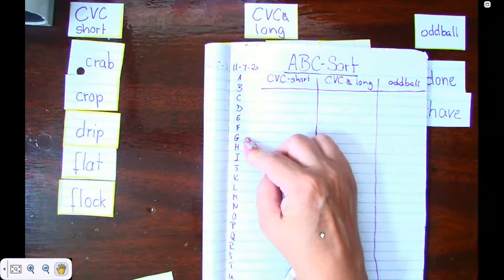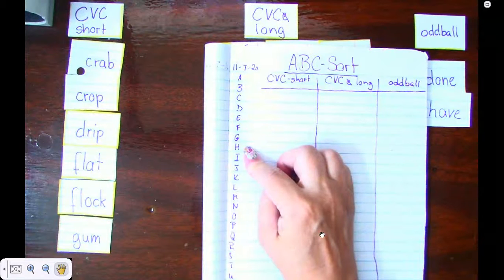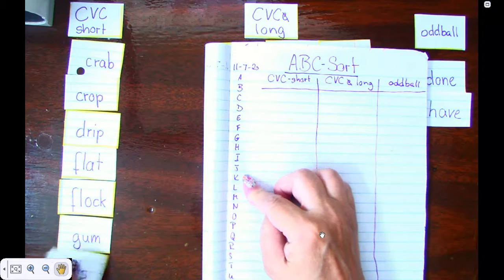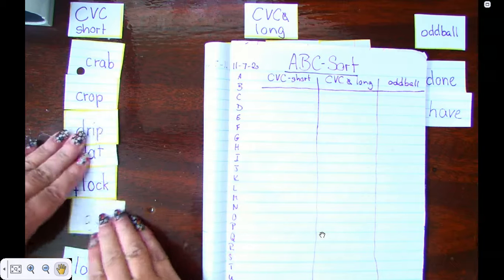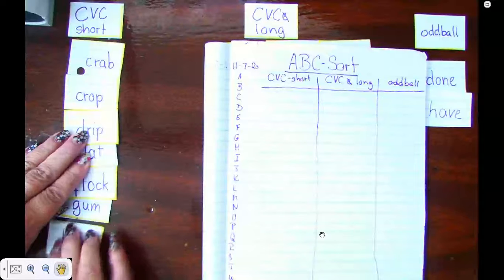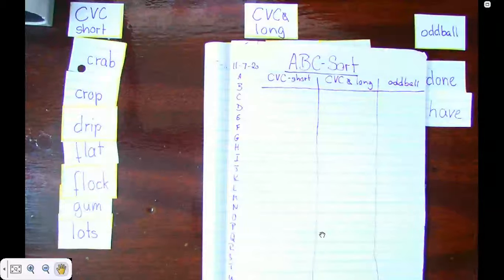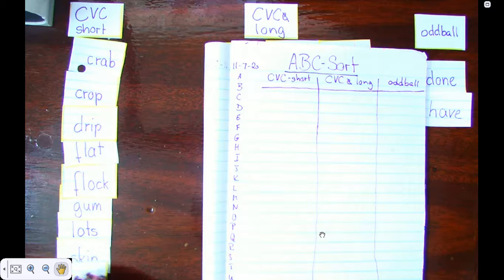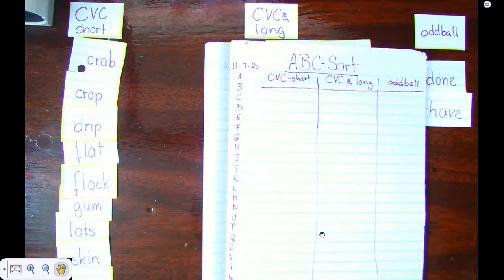Then I go G, I have gum, and then I go H, no, I, J, K, L, I have an L word and I'm gonna scoot these up a little bit so you can still see them. Lots, and then comes skin, and then wax. My W is last. So now that I have them in ABC order, it is really easy for me to just simply write them down.